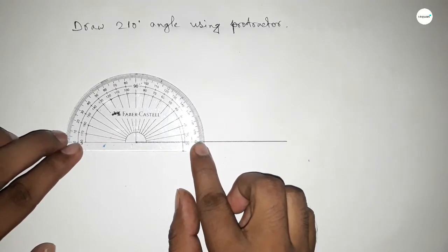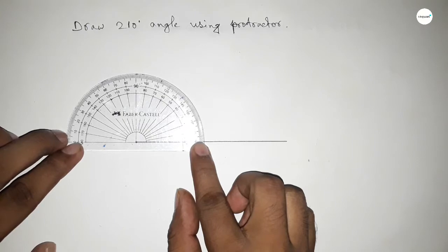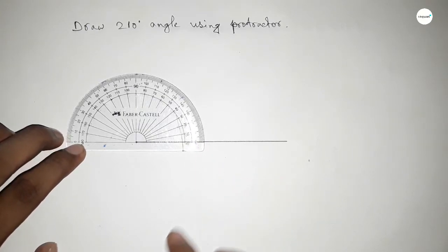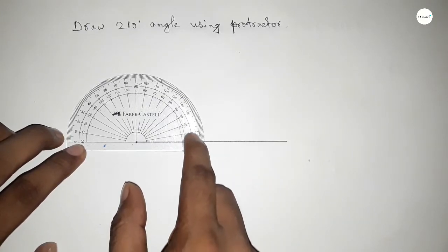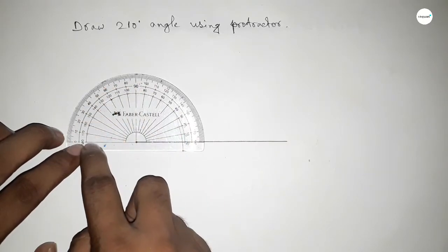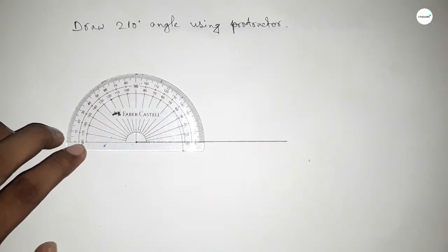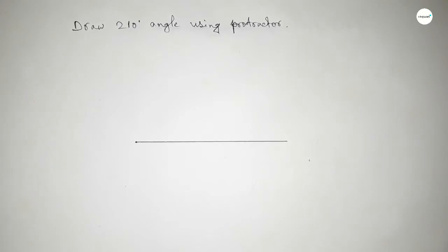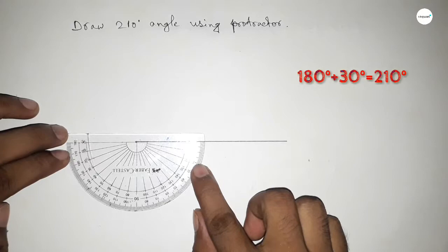Now putting the protractor on the line perfectly, then counting the angle up to 180. So this is 180, but we have to draw 210 degrees. So we have to add with 180 degrees by 30 degree angle.